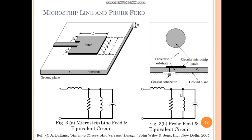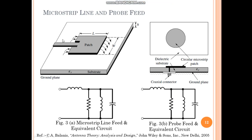This is the basic representation of microstrip feed line and probe feed line. The microstrip feed line is designed with a feed width that is very small compared to the width of the radiating patch. The equivalent circuit of these feed techniques is similar in both cases: the width of the microstrip feed line contributes to the inductance, and the inner conductor of the coaxial feed is also represented as an inductance. The remaining antenna can be represented as an RLC tank circuit.